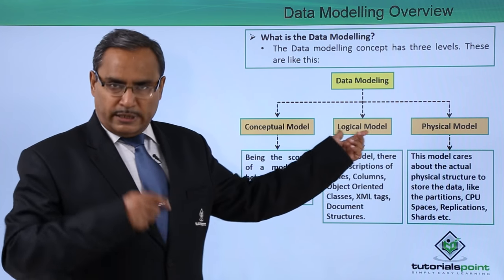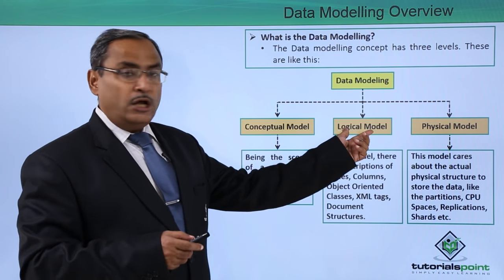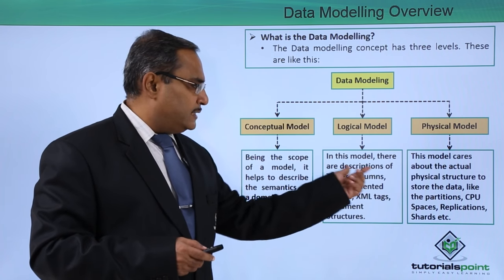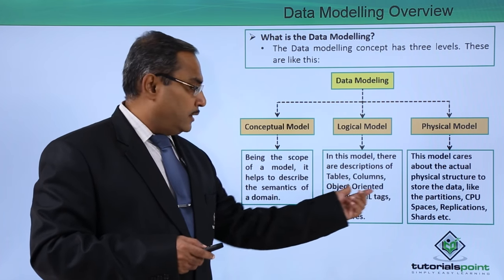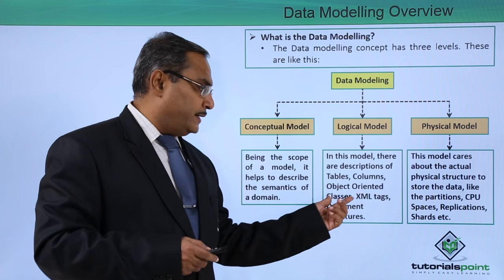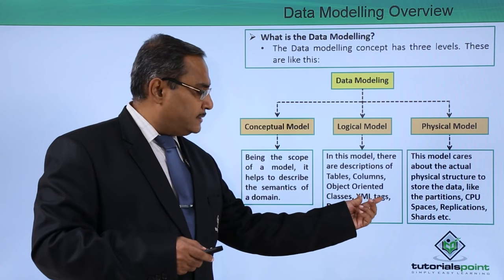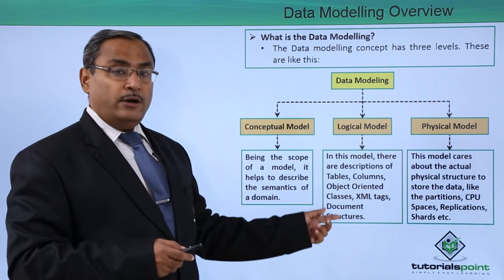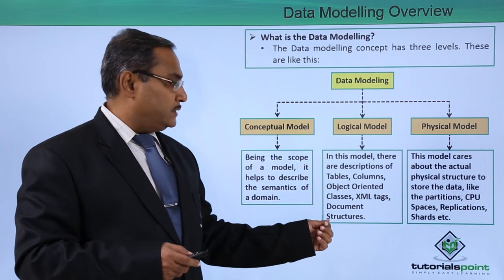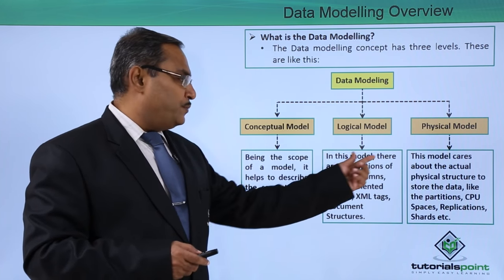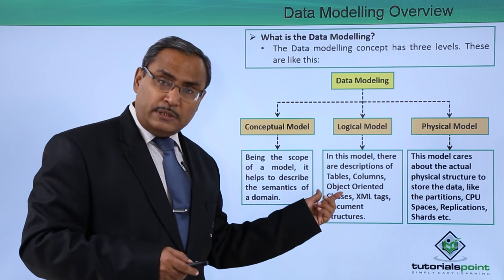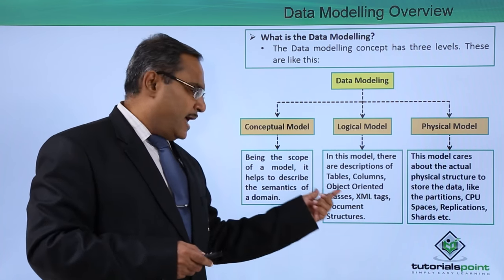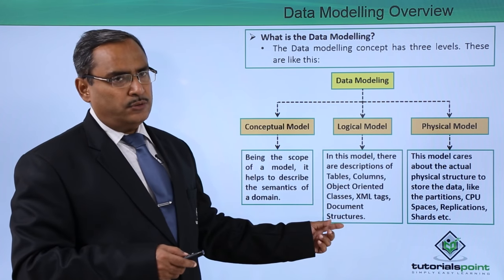Now the logical model. In this model there are descriptions of tables, columns, object-oriented classes, XML tags, document structures, and so on. Here we have all the detailed descriptions — descriptions for tables, columns, object-oriented classes, XML tags, and document structures, and so on.